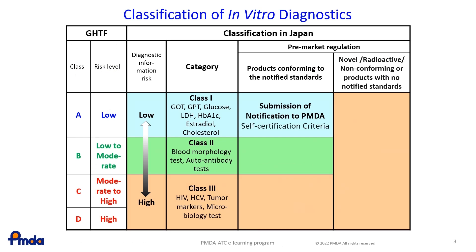IVDs in Japan are divided into three classes. The classes are graded 1, 2 and 3 in order from the lowest to the highest risk. Most of the Class II IVDs can be marketed if their conformity to the requirements is confirmed by an RCB.